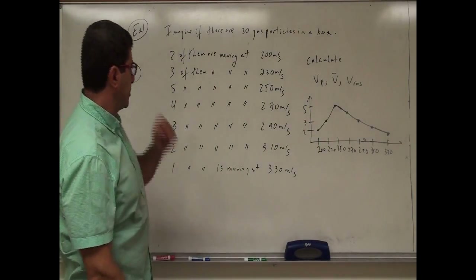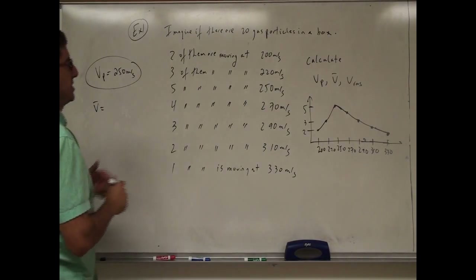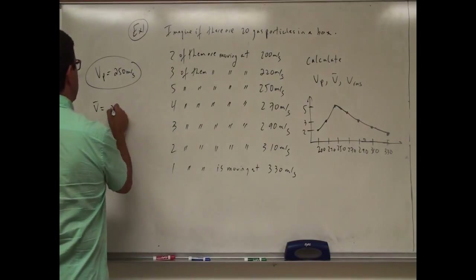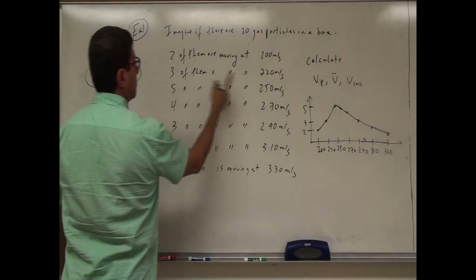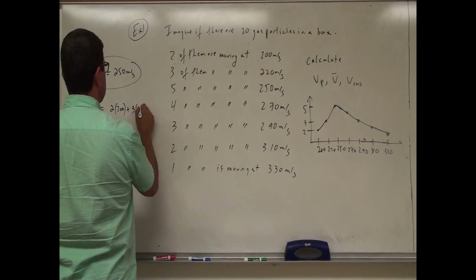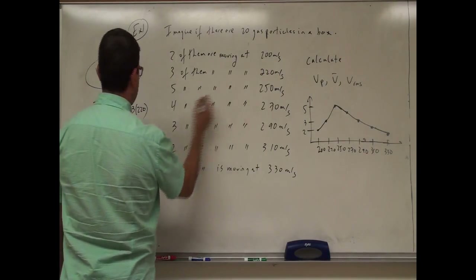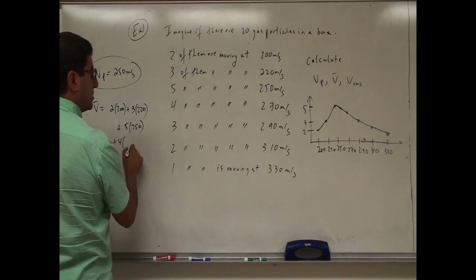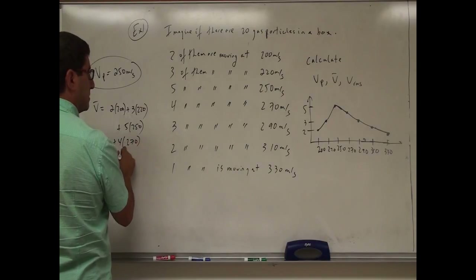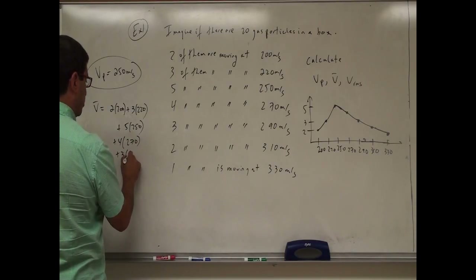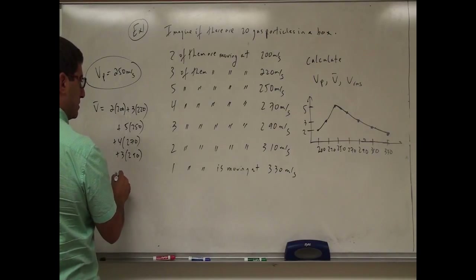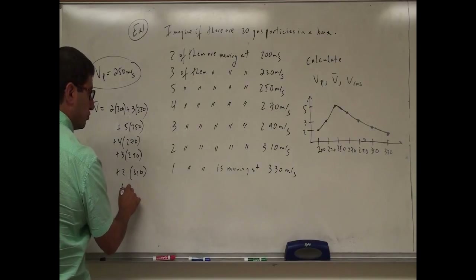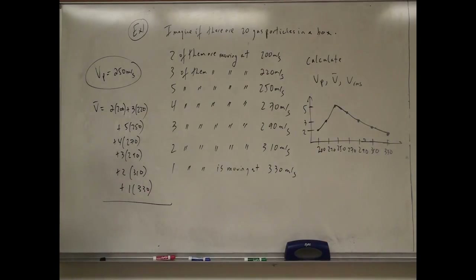So what's the average speed? The average speed is calculated by multiplying each speed by its number of particles: 2 times 200, plus 3 times 220, plus 5 times 250, plus 4 times 270, plus 3 times 290, plus 2 times 310, plus 1 times 330 — all in the numerator.